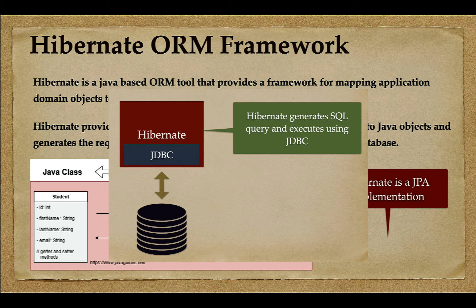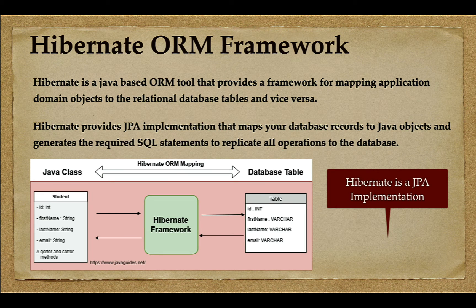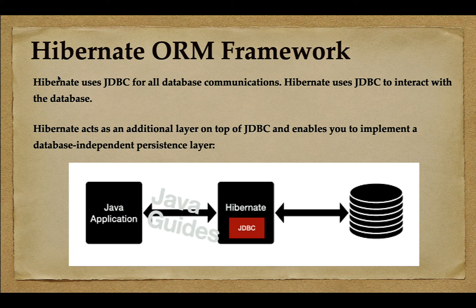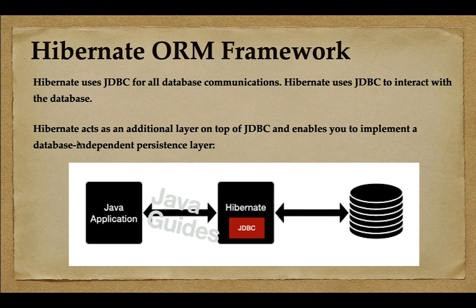Hibernate uses JDBC for all database communications to interact with the database. For example, in a Java application, when we use Hibernate, it internally uses JDBC for all database communications. Hibernate acts as an additional layer on top of JDBC and enables you to implement a database-independent persistence layer.